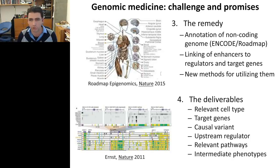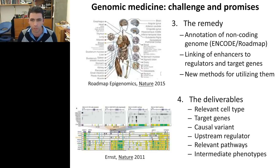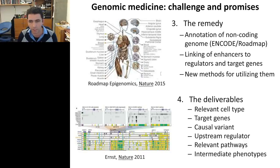The deliverables are sixfold: number one, what are the cell types through which genetic variants manifest? Number two, what are the genes they control and whose expression is altered between risk and non-risk individuals? Number three, what are the specific causal nucleotide mutations? Number four, what are the upstream regulators whose binding is disrupted? Number five, what are the relevant pathways through which these disease variants act? And number six, what are the intermediate cellular and organismal phenotypes on the way to disease?